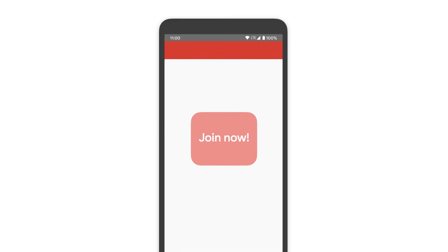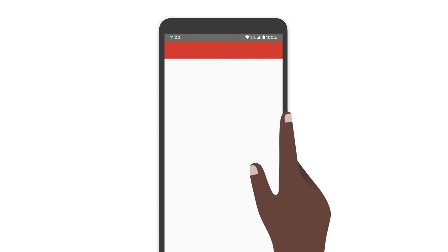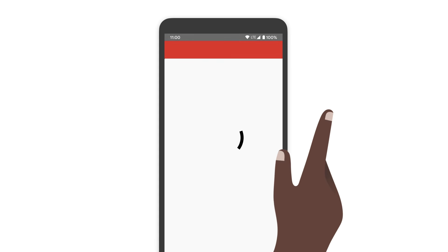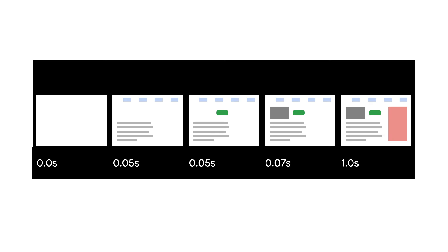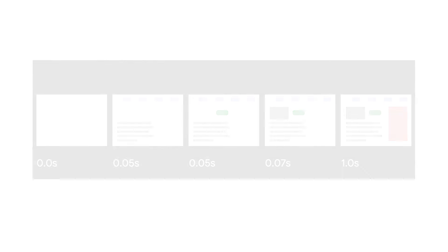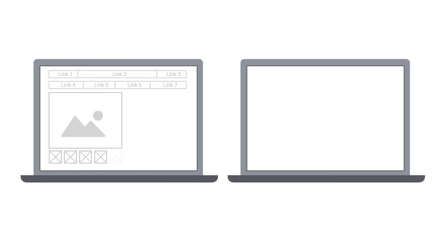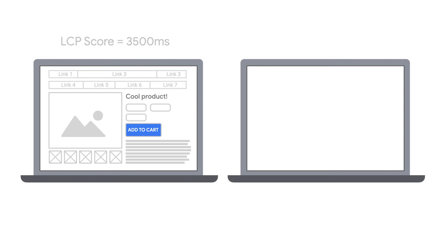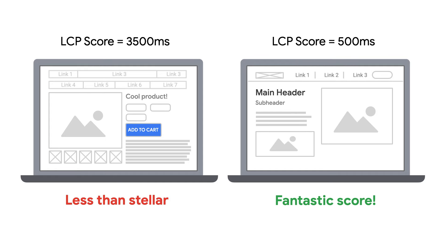As soon as our users touch, tap, or interact with our page, that window of time closes and LCP stops being measured. Whatever element had the highest number of seconds between the first byte and when it was painted is what is reported for the LCP for that URL. Like every other part of page experience, every page on your website has its own LCP score — your home page may have a less than stellar LCP, but your product or article pages could have fantastic results.